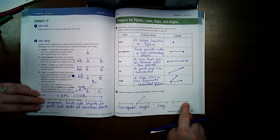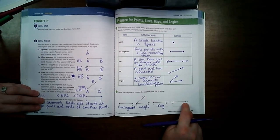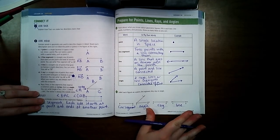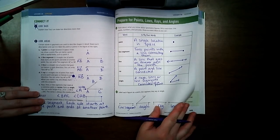And this one has arrows on both ends that keep going forever, so it's a line. Let's turn to page 648.